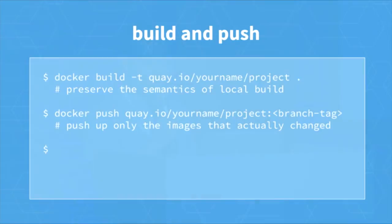Once we have the caching information pulled to your node, we execute the build. Fairly simple — we tag it with the name of your repository, and then once the build completes, we push it. All of this occurs over the local Docker socket in the build worker, which is itself a Docker image.